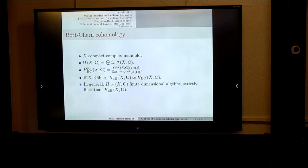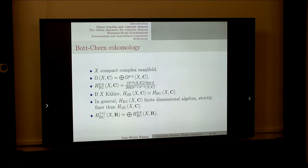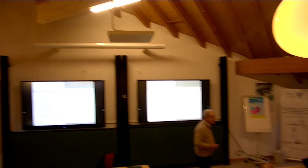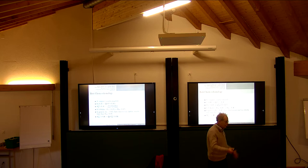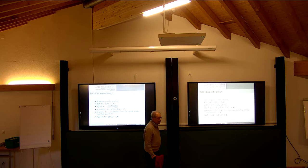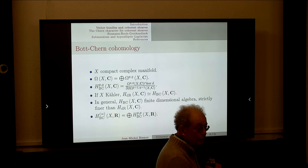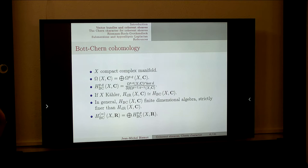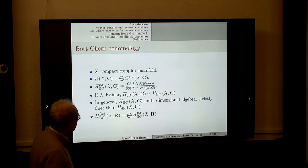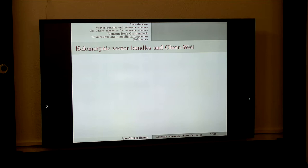If X is Kähler, nothing is gained over de Rham cohomology. For general complex manifolds, Bott-Chern cohomology is strictly finer. There is a map from Bott-Chern to de Rham cohomology, and in the Kähler case you can identify the groups using the (p,q) splitting. I'll use H_{BC}^= which is just a direct sum of the H^{pp}_{BC} in equal degree.